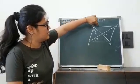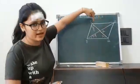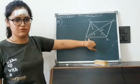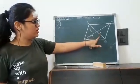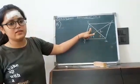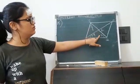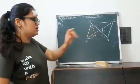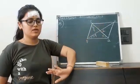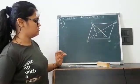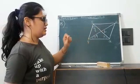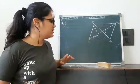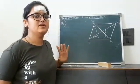Question number 15 is: there is a rhombus P, Q, R, S where one angle is marked as 34 degrees and there are two unknown angles x and y. The question is to find the values of angle x and angle y. You must know all the properties of the rhombus before solving this question. I am going to use the property that diagonals of the rhombus bisect each other at 90 degrees.